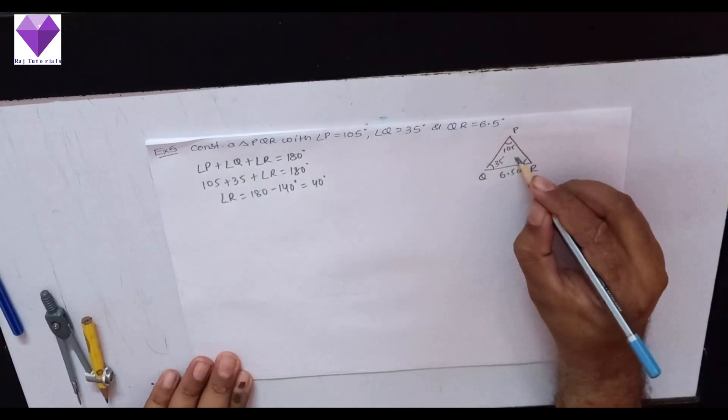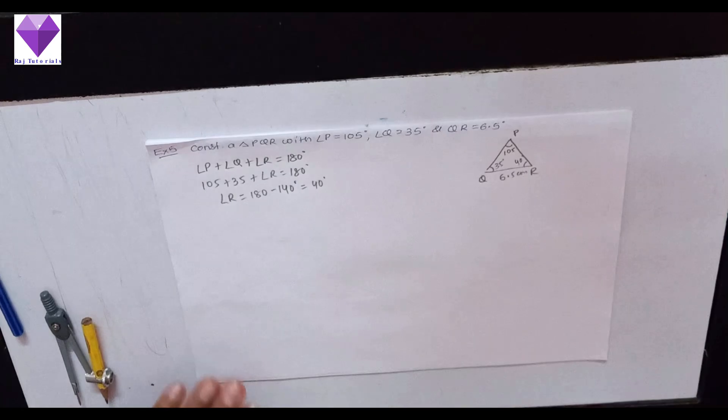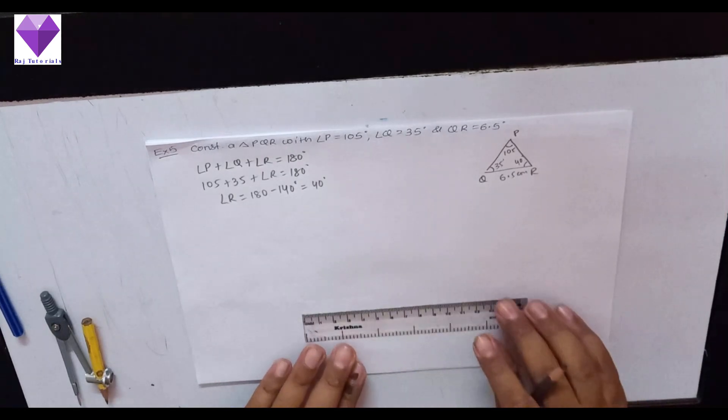So if I make angle R equal to 40 degrees, I can construct the triangle easily. Using that property, first I am drawing 6.5 cm.